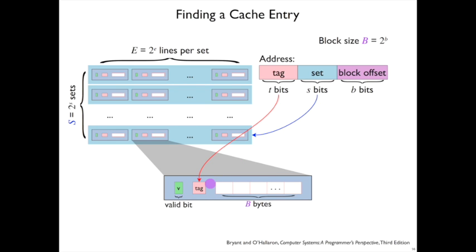In that case, we know that the byte we're looking for is in that cache line's block. And so we take the block offset and use it to index into that block.